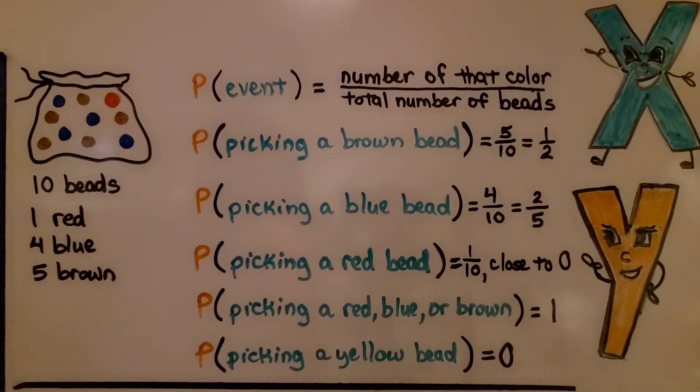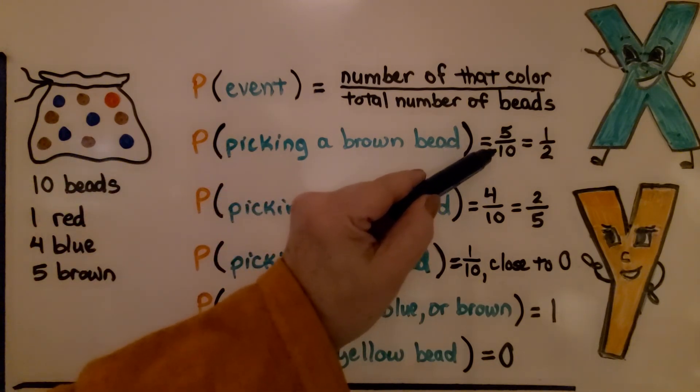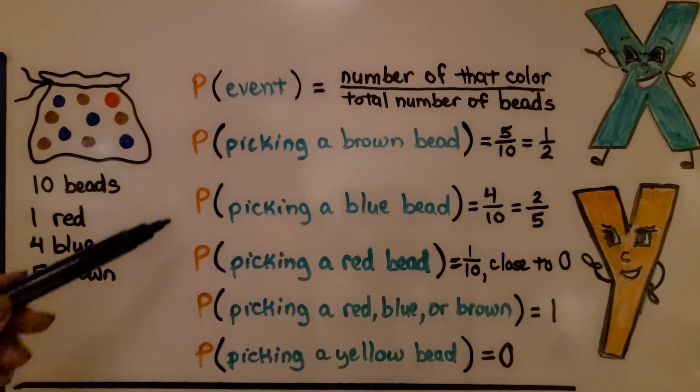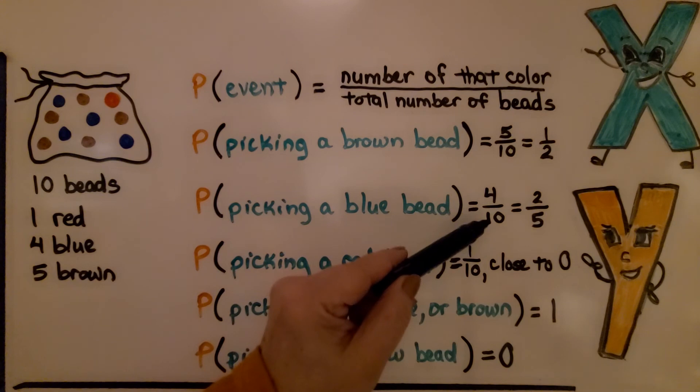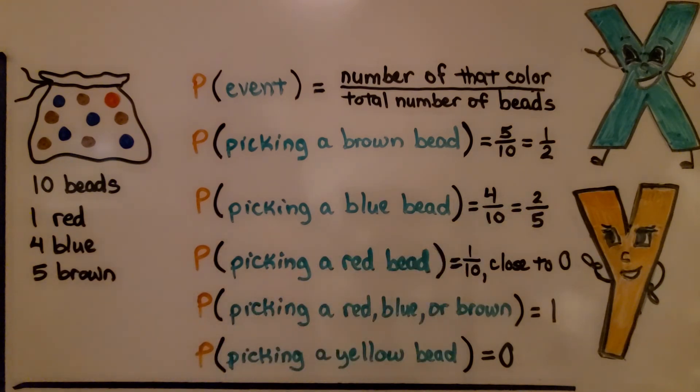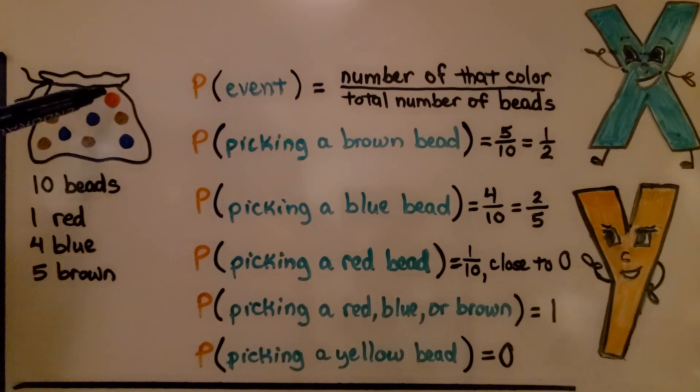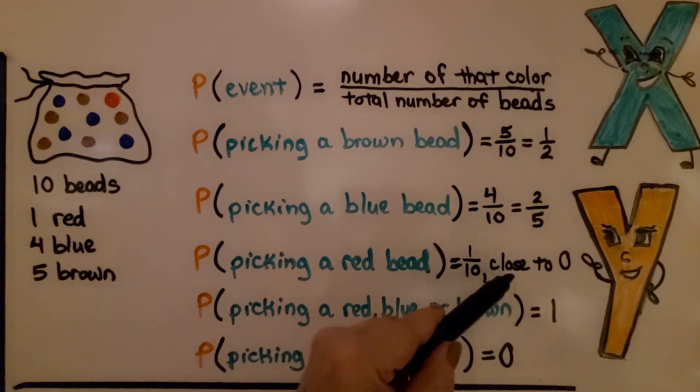The probability of picking a brown bead, there's five of them and there's 10 in the bag, that would be five tenths or one half when it's simplified. The probability of picking a blue bead, there's four of them, so that would be four tenths, which can be simplified to two fifths. The probability of picking a red bead, there's only one out of the 10, so that's one tenth. That's very close to zero.